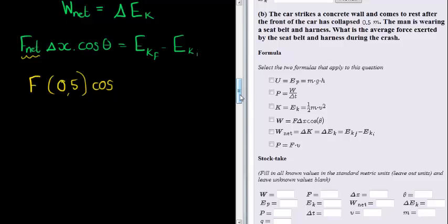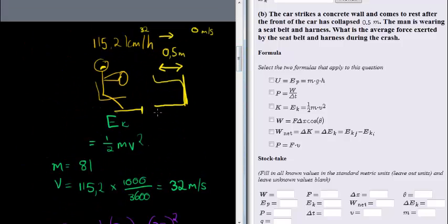Cosine, obviously the force is exerted in the opposite direction as the displacement. Well, why do I say that? Remember that the displacement is from here to there, in the forward direction. However, the force exerted by the seat belt is in the opposite direction because it's stopping him.